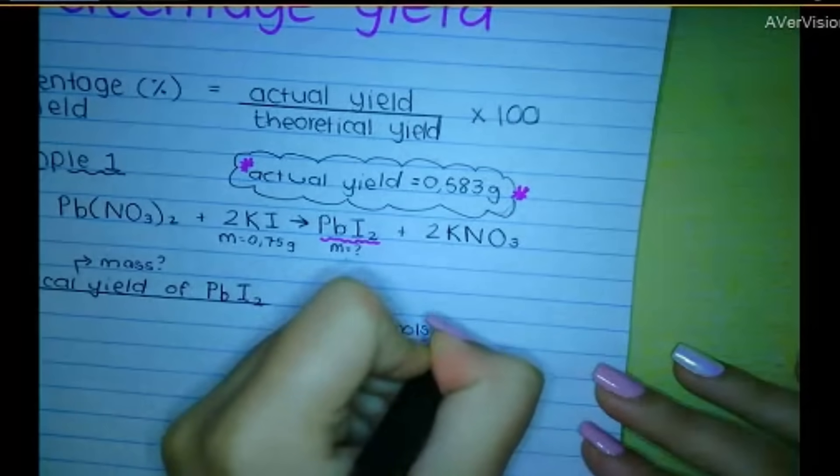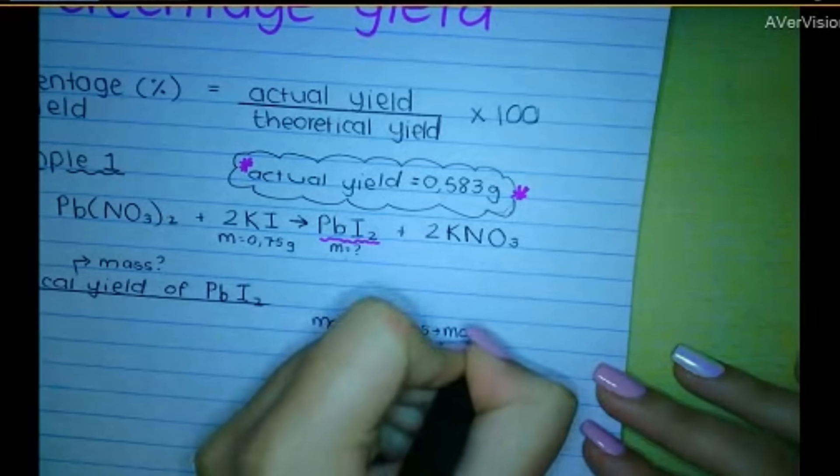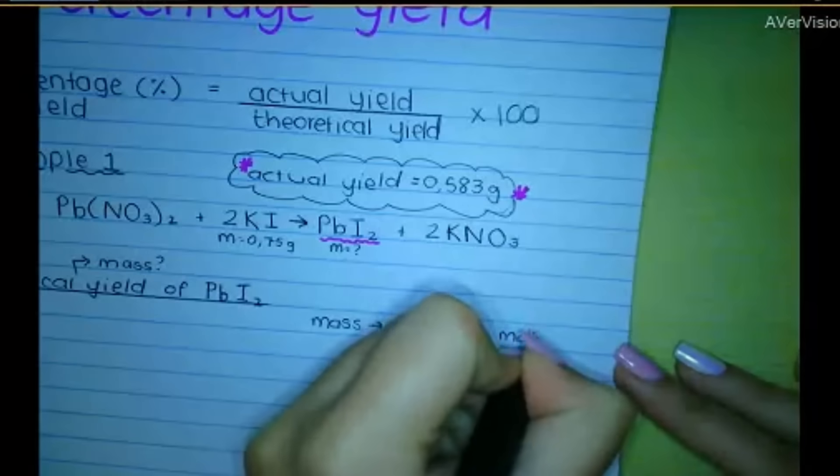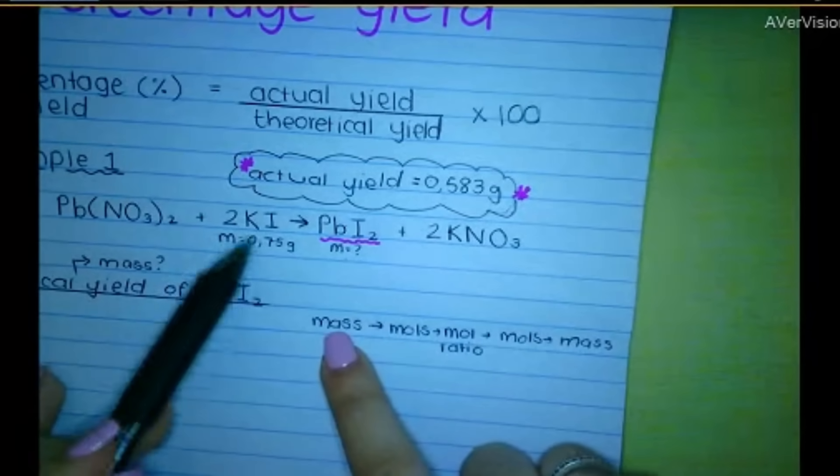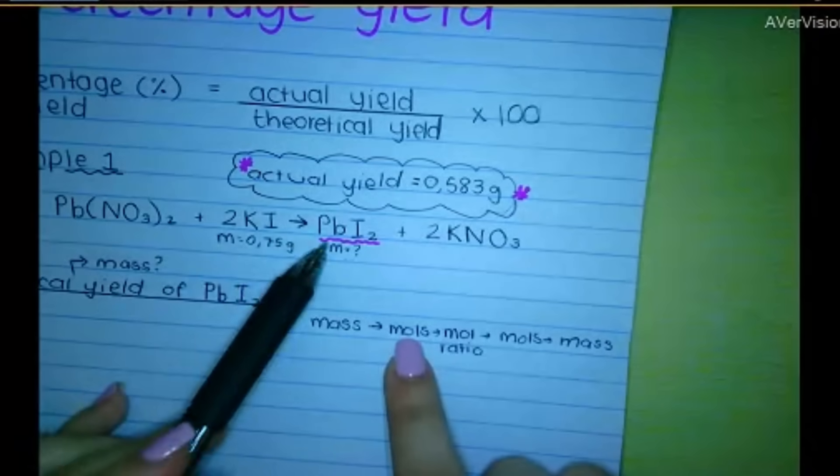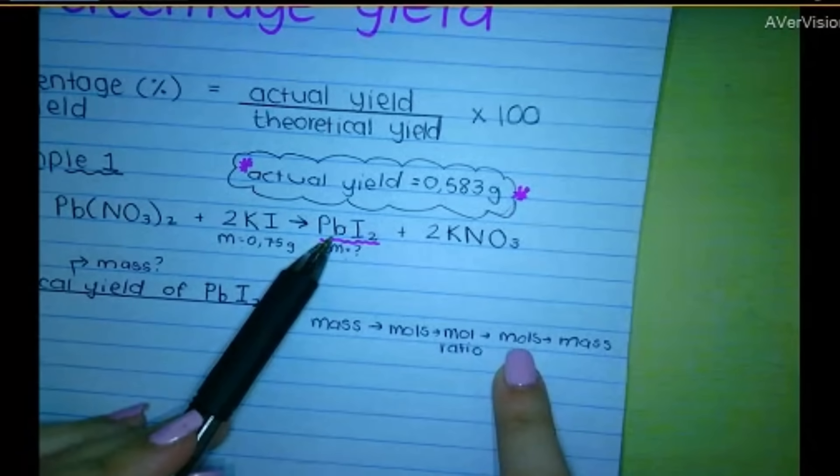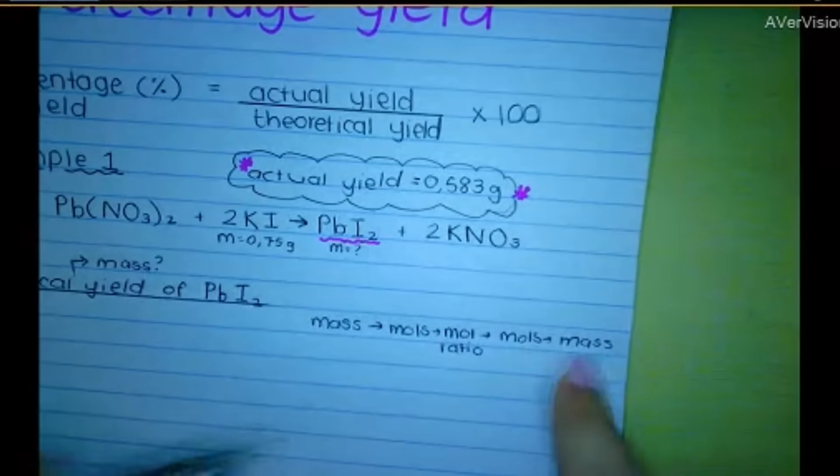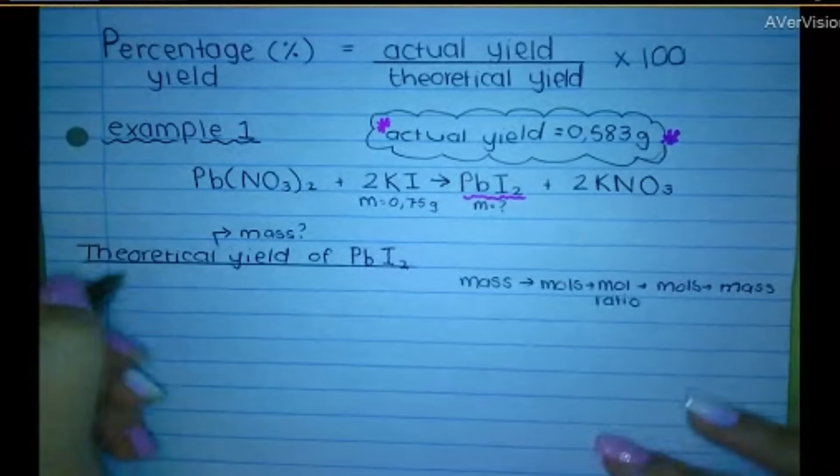Then we use the mole ratio. Then we have the moles of the second thing. And then back to mass. So we go from the mass of KI to the moles of KI. Then we use the mole ratio to get the moles of this. And then we can eventually get the mass. You need to do this properly. You can't just go from mass to mass. So, let's do this.